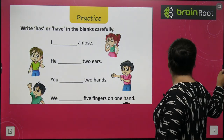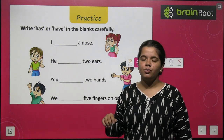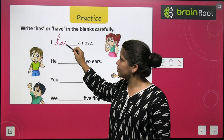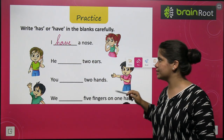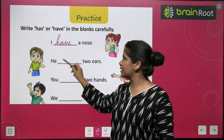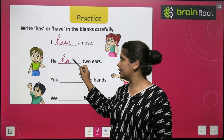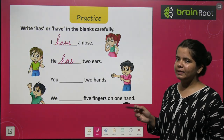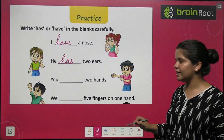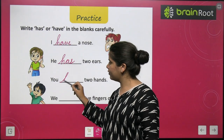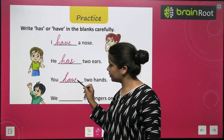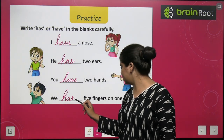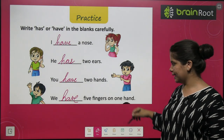Now we have an exercise to fill in. I dash a nose — as we discussed, with 'I' or 'you', we always use have. So: I have a nose. He has two ears — has, because 'he' is singular, and has is used with singular. You have two hands.